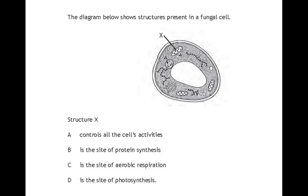For this final question, you have been given a structure X. You have to identify what it is, but you also have to say what the function of the structure is. Pause the video and I will describe the answer. By looking at this diagram, you should know that structure X is a mitochondria. The mitochondrion is the site of aerobic respiration, which should be answer C. Once you've gone through these and you're happy with the information and the past paper questions, go on to quizzes and attempt the questions that I have added for 1.1 cell structure. Then we can move on to 1.2, which is transport across the cell membrane.